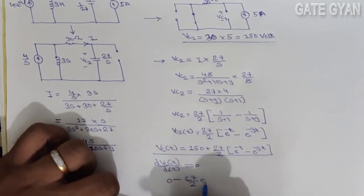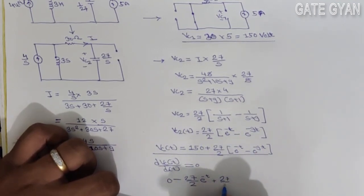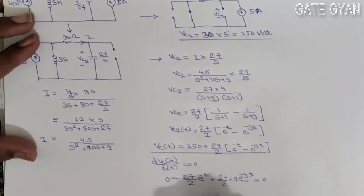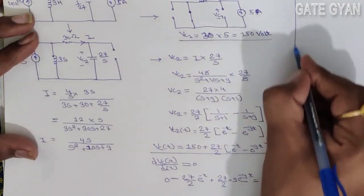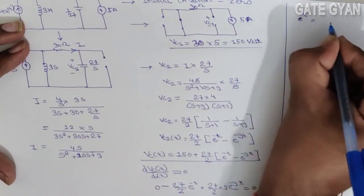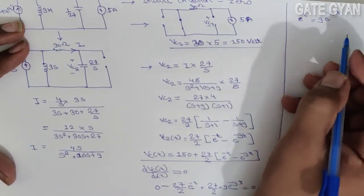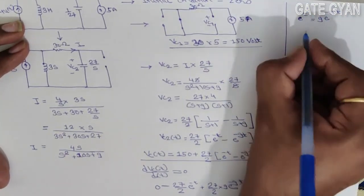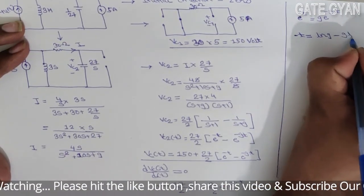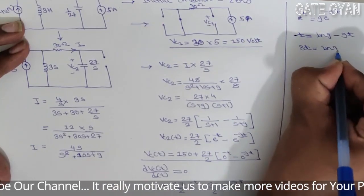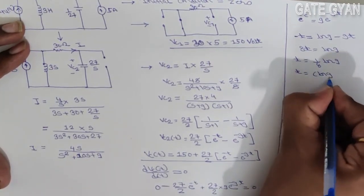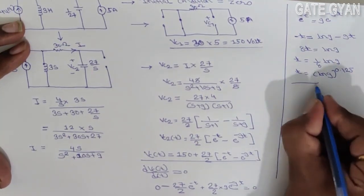Setting dVC/dt = 0 gives: −(27/2)e^(−t) + (27/2)(9)e^(−9t) = 0. This simplifies to e^(−t) = 9e^(−9t). Taking the natural log of both sides: −t = ln9 − 9t, so 8t = ln9, giving t = (1/8)ln9, or as given in the question, t = 0.125. This is the final answer.